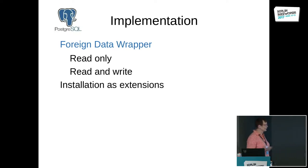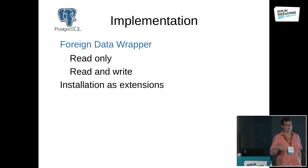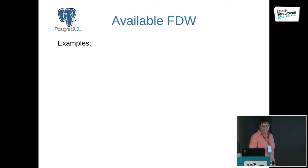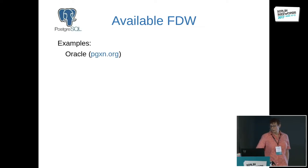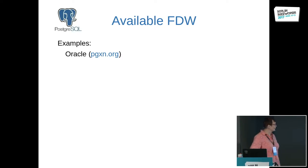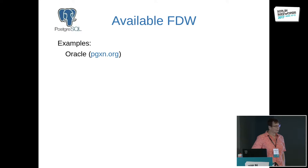Installation is done as Postgres extensions. Some you have to compile on your own, some can be installed on the fly. An example of available foreign data wrappers is Oracle, available through PGXN — if it can be installed as a package, then it's just PGXN install and that's all. With Oracle it's read-and-write, meaning you're not only able to read data from an Oracle database, you're also able to write back to it, which is pretty funny.